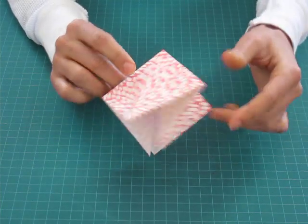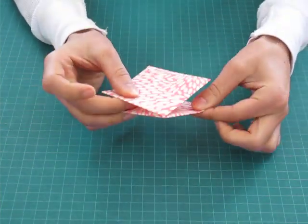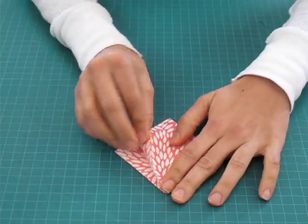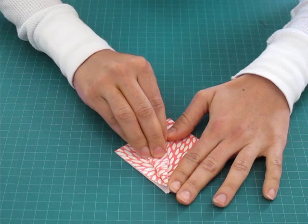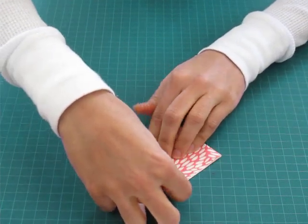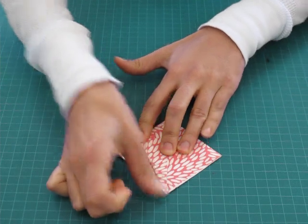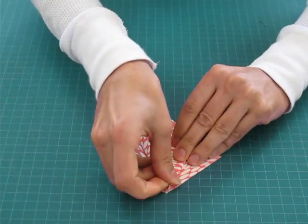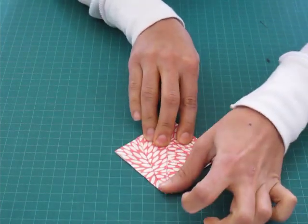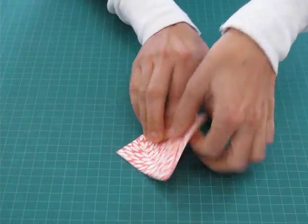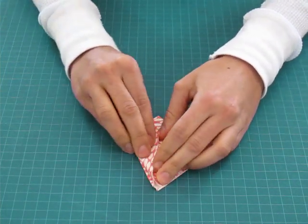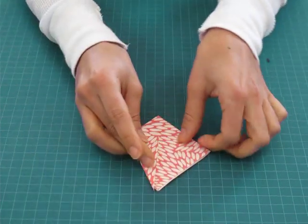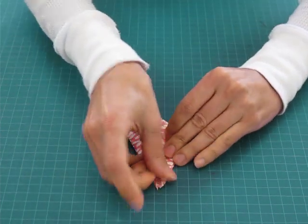So you're going to have a closed end with a point and then an open end. Keep the opened end away from you and take one corner on the side and fold it into the center line. So you do that on the other side as well. You flip your paper over and do the same. So that one corner comes into the center line and flip it over. Perfect.